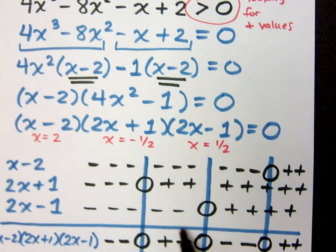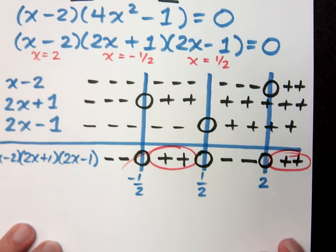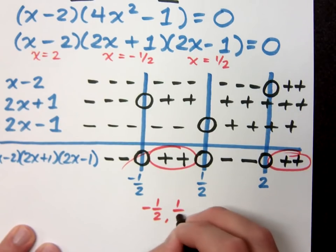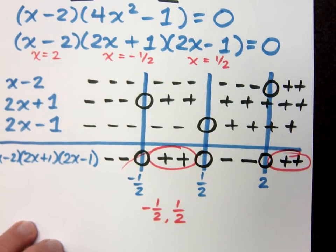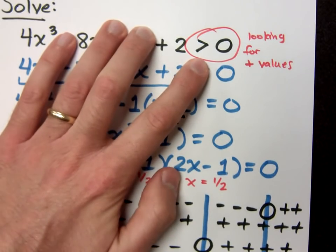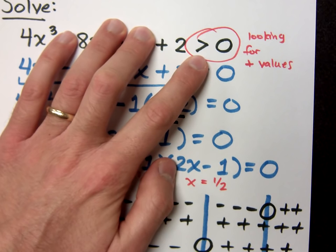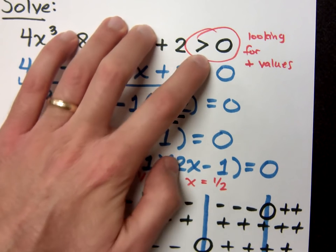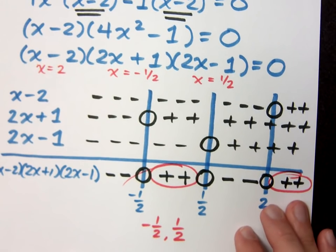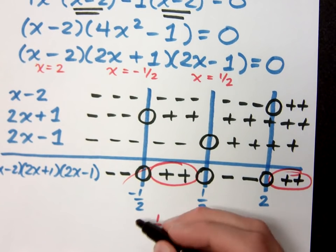My positive values happen right here and right here. So what intervals do those correspond to? That corresponds to the interval from negative 1 half to positive 1 half. Now am I including these guys? If you look at the original inequality, just to make sure we're understanding this, the original inequality just said greater than, not equal to. So since it was greater than but not equal to, I don't get to include these values themselves, so I'm going to use parentheses.